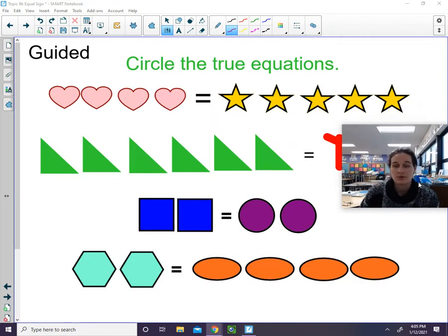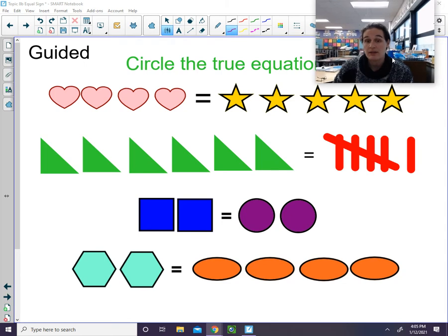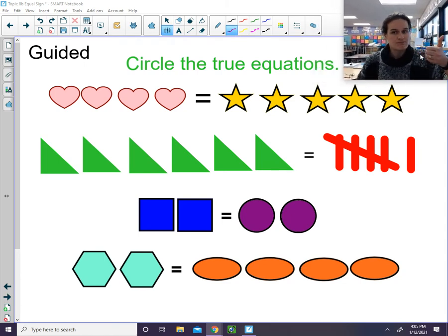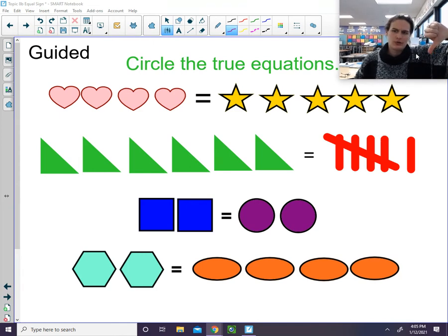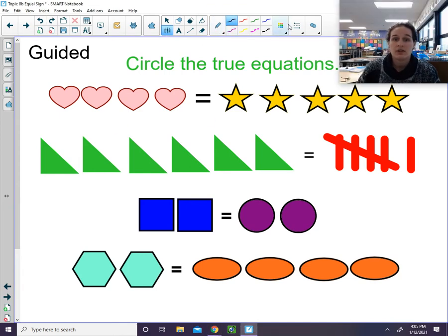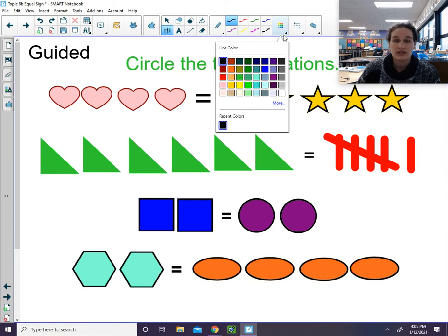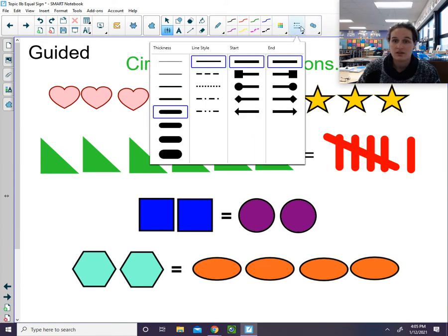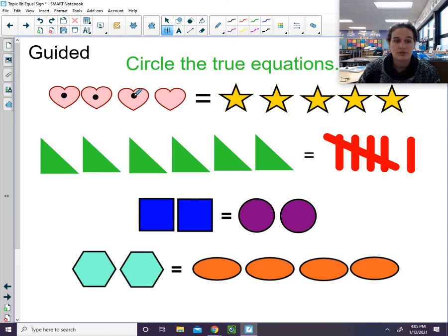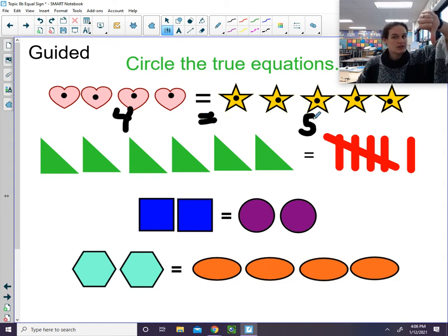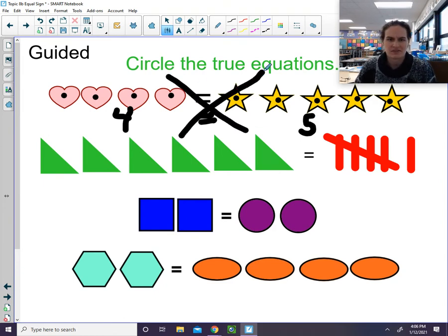We have some more practice problems. For each of these, I would like you to give me a thumbs up if it is a true equation, or a thumbs down if it's not. Let's count each of the shapes. We have one, two, three, four. And here we have one, two, three, four, five. So is four equal to five? Thumbs up or thumbs down? They're not the same, so let's put an X through it.